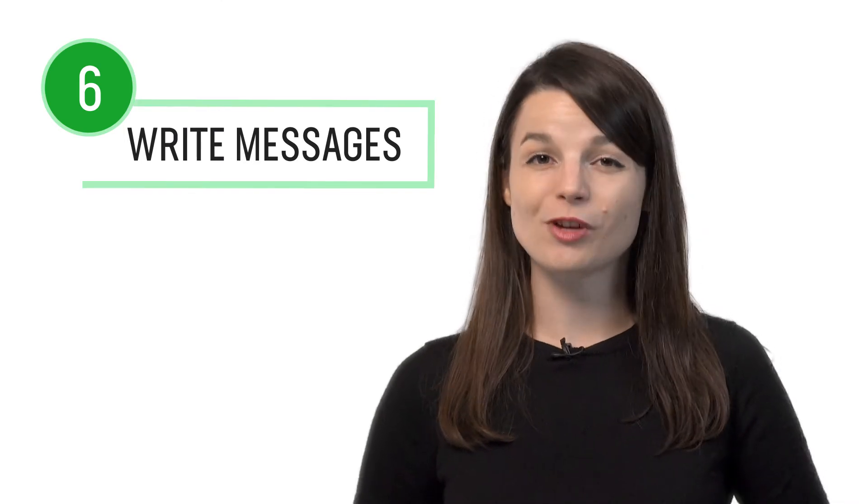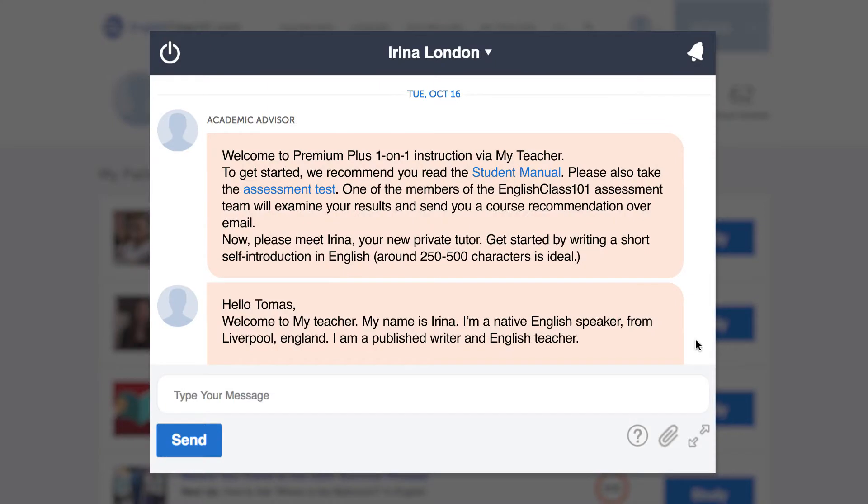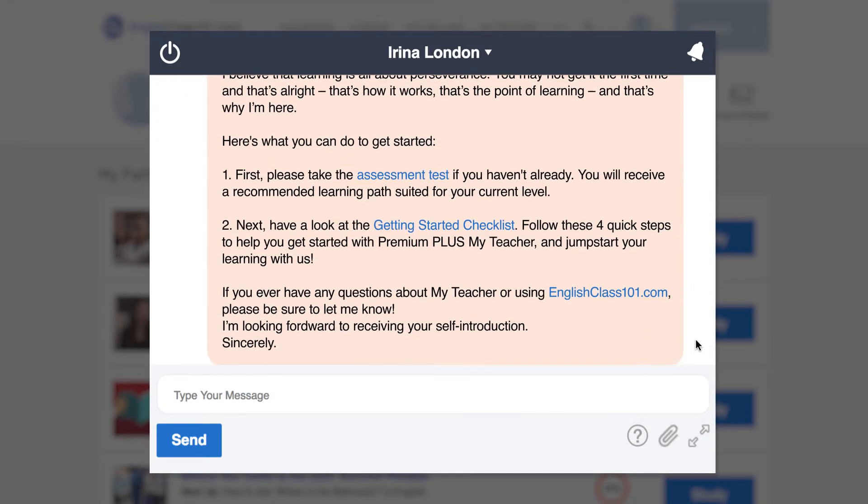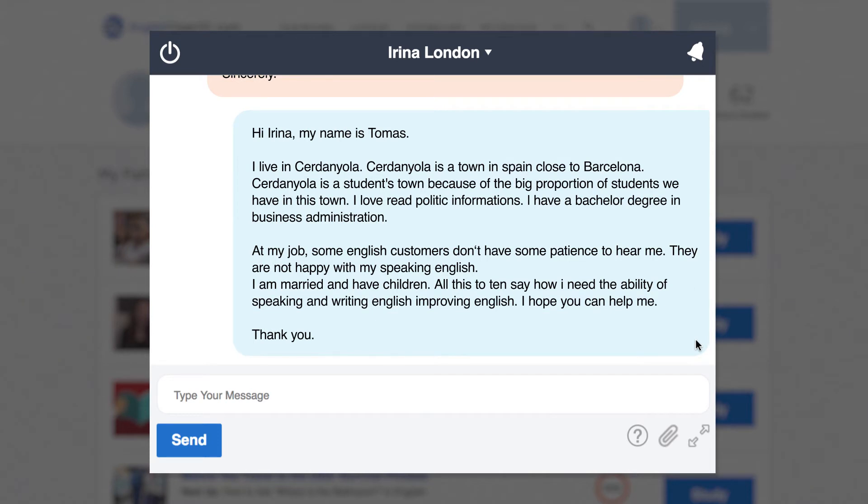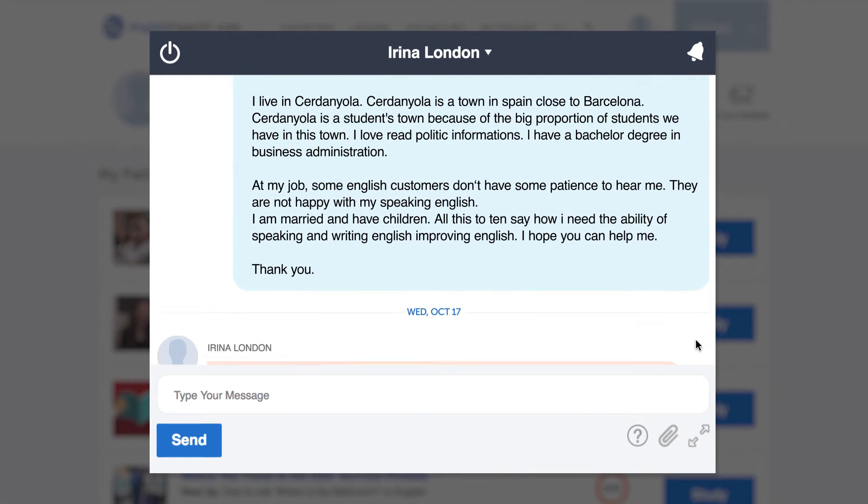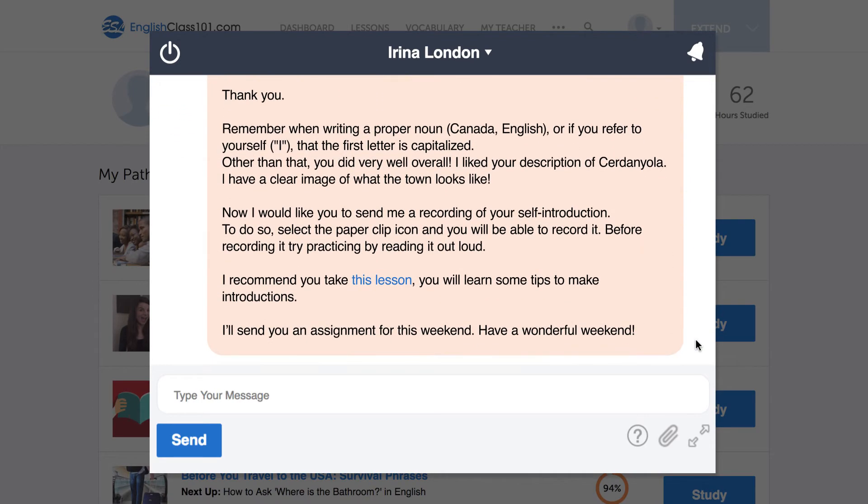Number 6. Write short messages to your Premium Plus teacher. Just write out a message and send it to your Premium Plus teacher for review. In fact, as a first step, all new Premium Plus users are asked to write a self-introduction and send it to their teacher. Your teacher will review your work, give you feedback, corrections, and help you improve your writing skills fast.